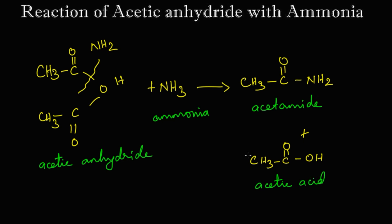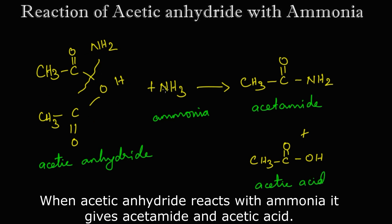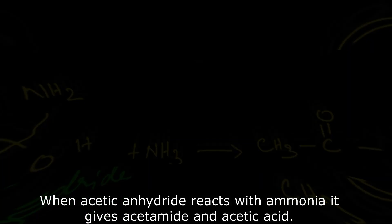Let's summarize the reaction. When acetic anhydride reacts with ammonia (NH3), the bond between the carbon and oxygen breaks. The NH2 group attaches to the CH3COO part, and the hydrogen from ammonia attaches to the CH3C(=O)O part — giving us acetamide and acetic acid as the products. Thank you.